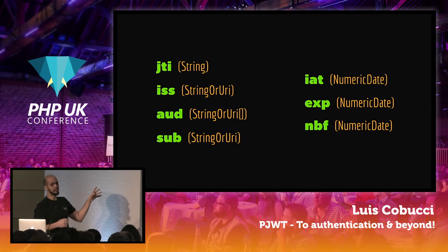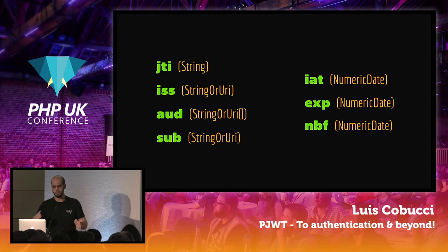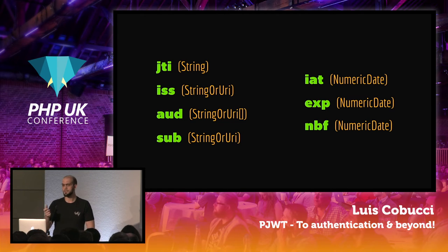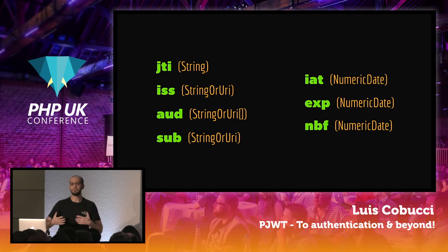These three date fields are very powerful because you can say: I'm creating the token now, it can only be used until tomorrow, but it cannot be used before five minutes from now. So you can specify a very good range. This numeric date is usually represented using a Unix timestamp as an integer, but it can also be a string with microseconds. So it's very powerful.